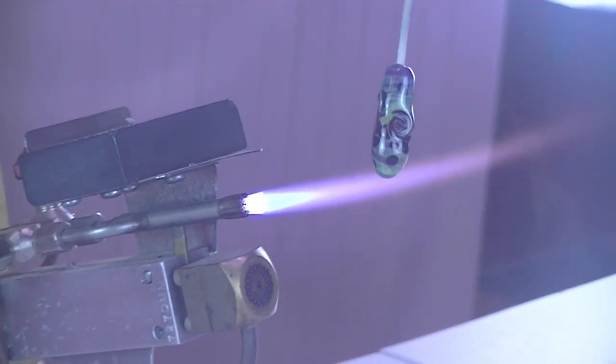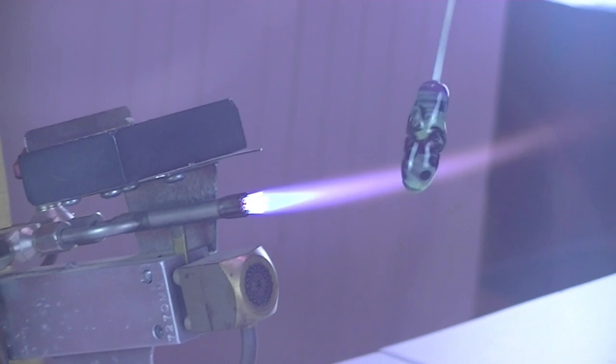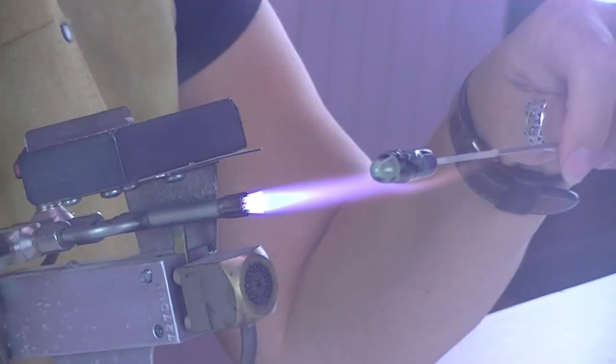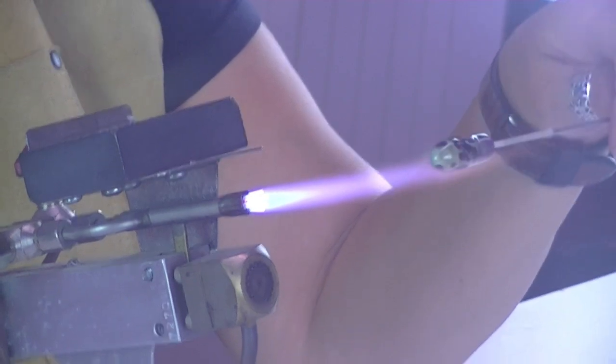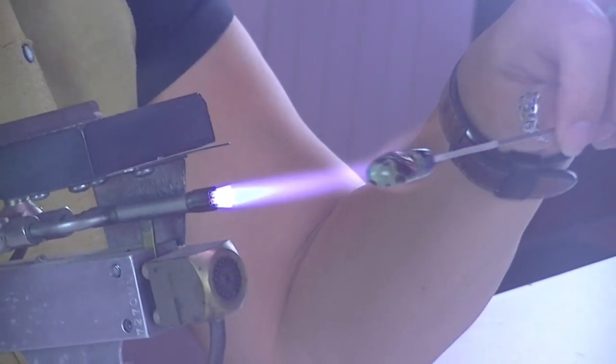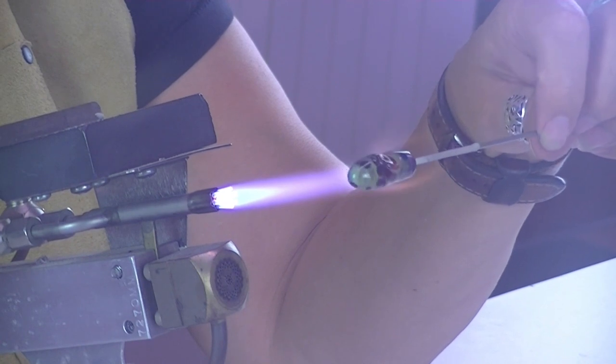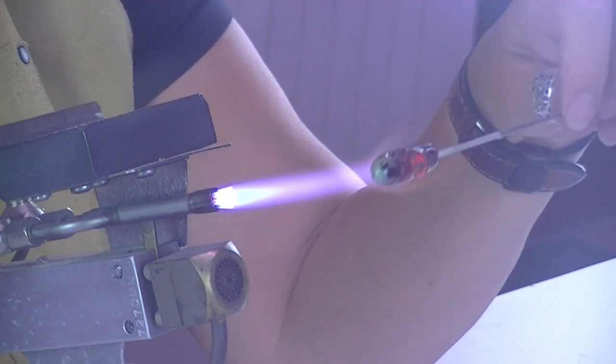So we've got at the moment three twists on there. I could put some more in if I wanted to but I'm going to leave it as that. And then we need to just melt those in. So I don't want to get the bead too hot, so gently work over those areas that I've twisted.